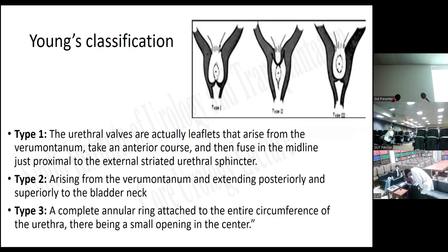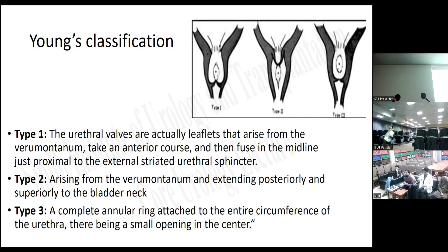Young's classification: in 1919, Young described the first endoscopic observation of urethral obstruction and coined the terminology of posterior valve. There are three types. Type one: leaflets arise from the verumontanum, take an anterior course, and fuse in the midline just proximal to the external striated urethral sphincter. Type two is now obsolete. Type three: a complete annular ring attached to the entire circumference of the urethra with a small opening in the center.